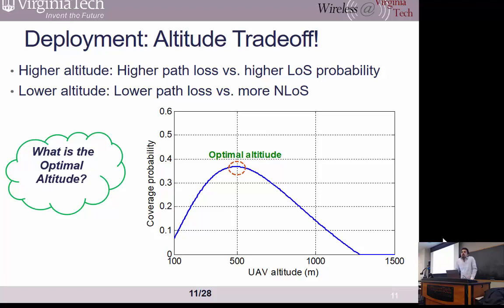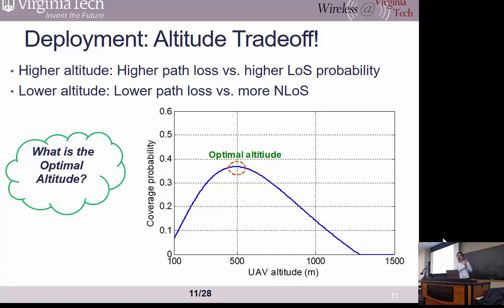An audience member asked if the simulation used single or multiple drones. The speaker replied this is for a single drone — with multiple drones, interference would also impact the optimal altitude, making it more complex. For a single drone it's much easier to derive the optimal altitude analytically. The problem structure based on the line-of-sight probability model leads to convex or concave optimization. If someone proposes a better model, the conclusions may change.